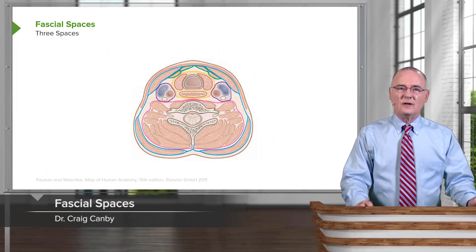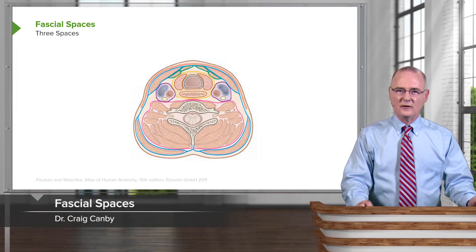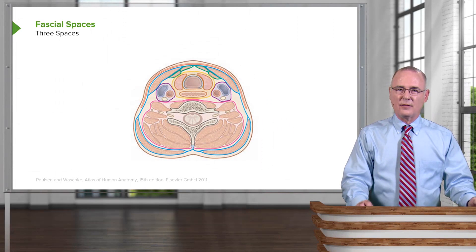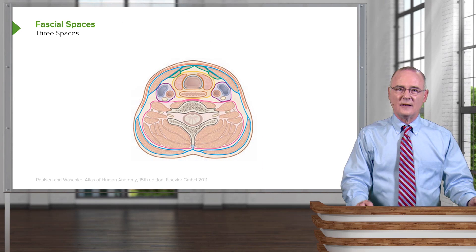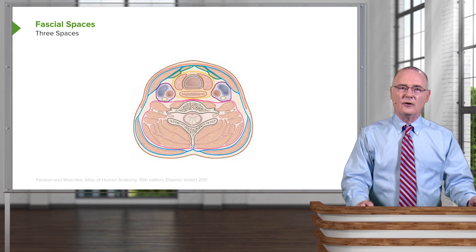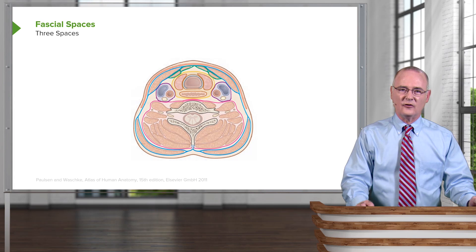We're going to transition over to fascial spaces. There are three spaces that can form between the deep fascial layers. We're going to be able to see two of these areas very well. The third, unfortunately, is not well illustrated in the image, but we'll make note of the fact that it does exist.